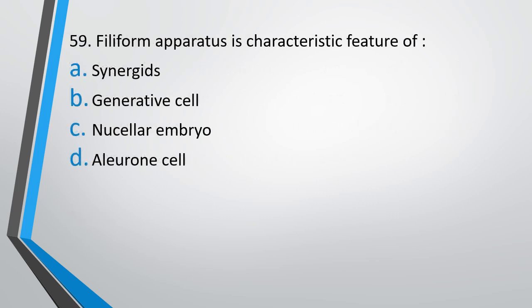Question number 59. Filiform apparatus is characteristic feature of synergids, generative cell, nucellus or embryo, or aleurone cell. The correct answer is option A. Synergids.